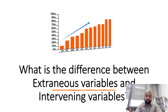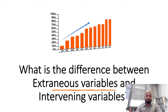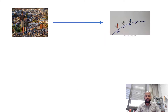In today's video, I am going to explain the difference between extraneous variables and what is the meaning of an intervening variable. I will use two examples in today's video so that you find it easy to understand, and then you can apply the knowledge from this video to your own research.